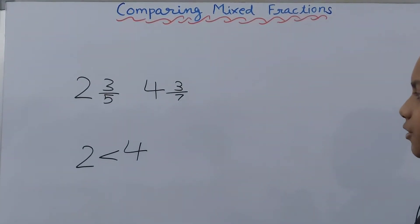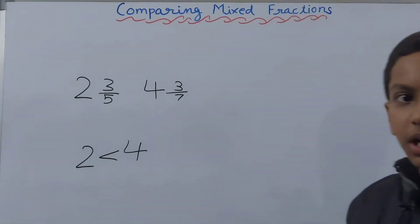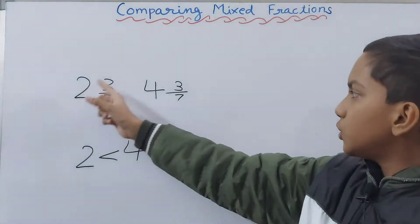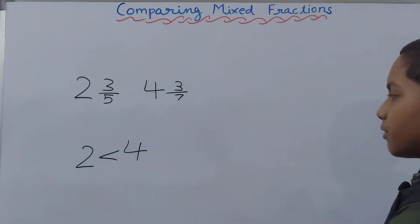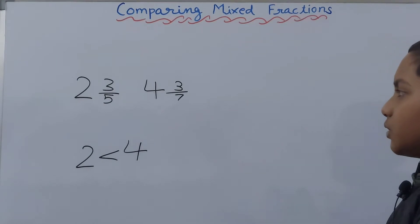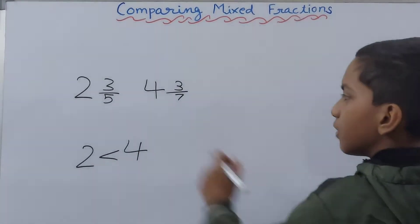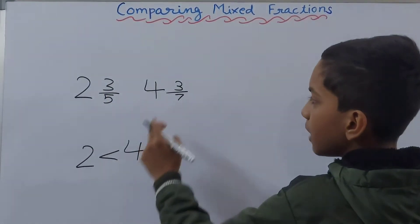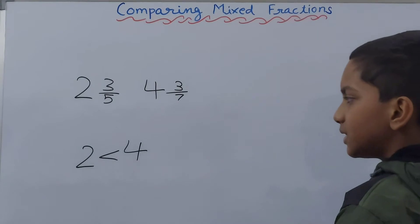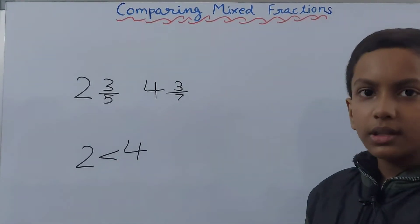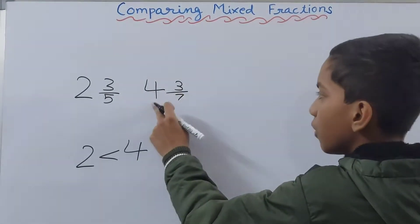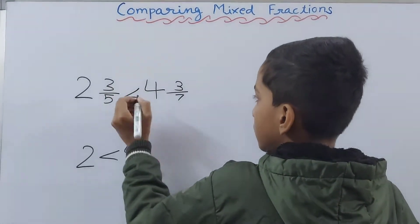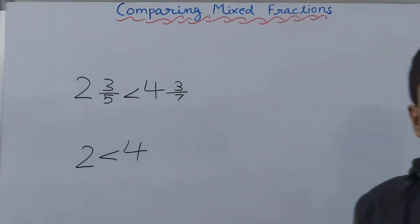This is two whole and three upon five, and this is four whole and three upon seven. Since four is greater than two, that means four whole and three upon seven will also be greater than two whole and three upon five.